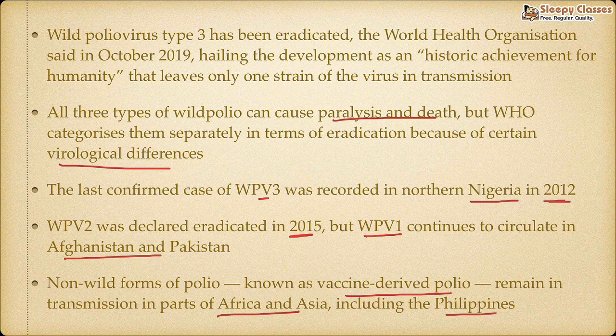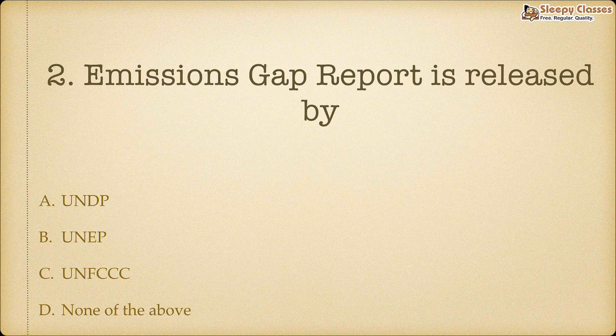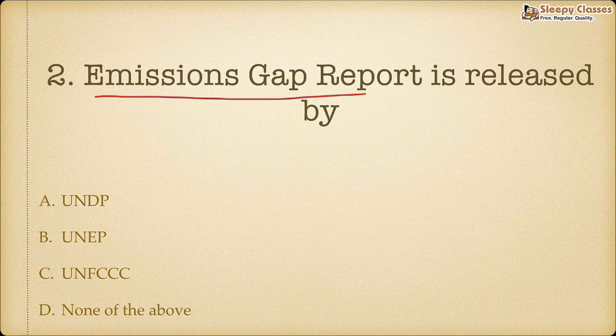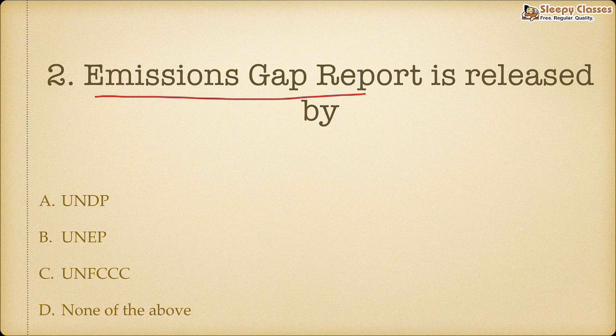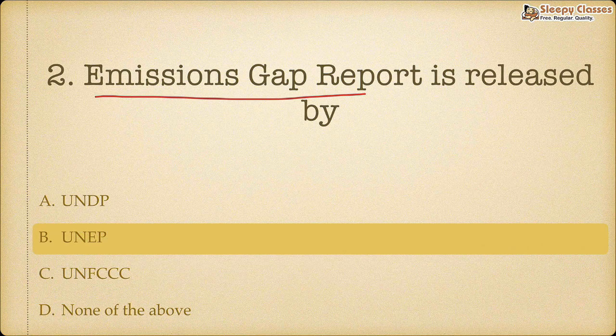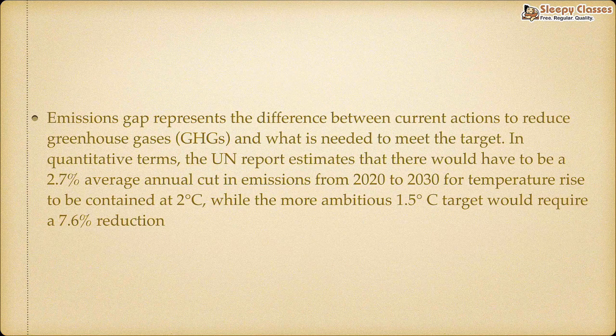Moving forward to the second question: the Emissions Gap Report is released by which of the following — UNDP, UNEP, UNFCCC, or none of the above? This is a very important report on climate change. The correct answer is B — UNEP, the United Nations Environment Programme.